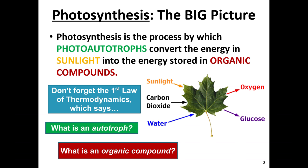One big thing I'd like to emphasize is the idea of being able to take sunlight and convert that into a molecule that contains lots of potential energy, like glucose. We have to remember the first law of thermodynamics: energy cannot be created or destroyed, but it's just transformed from one form into another. When I say that photoautotrophs convert the energy in the sun into energy stored in organic compounds, I don't want you to think these photoautotrophs make energy. They do not make energy. However, they can transform light energy into chemical energy through photosynthesis.